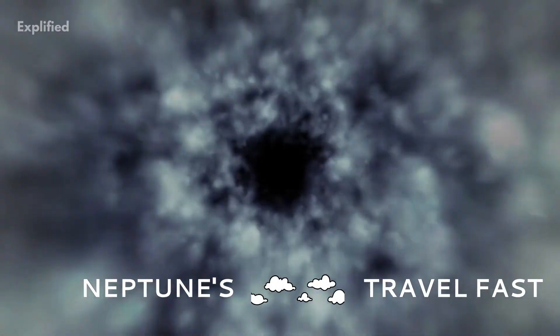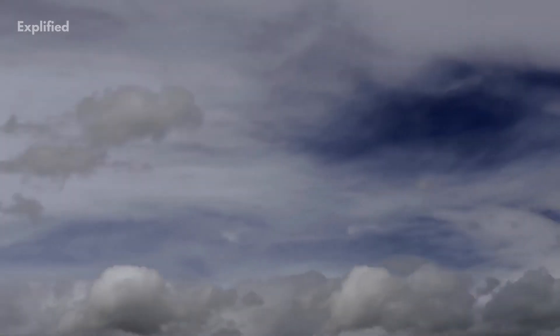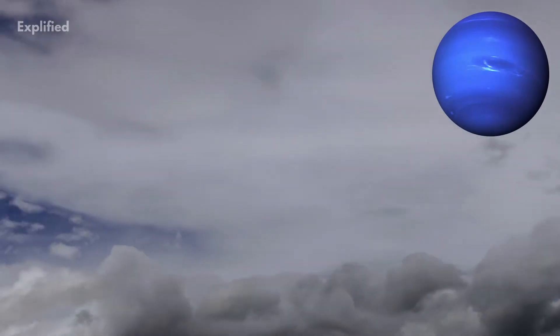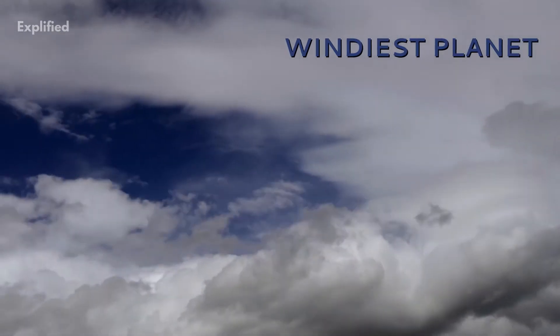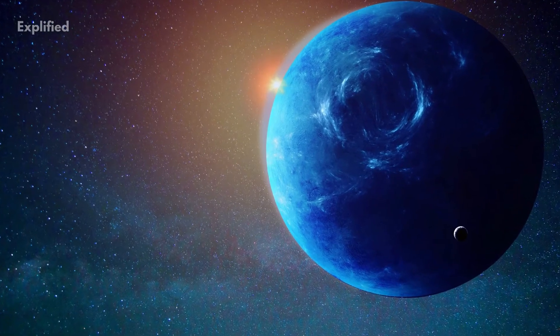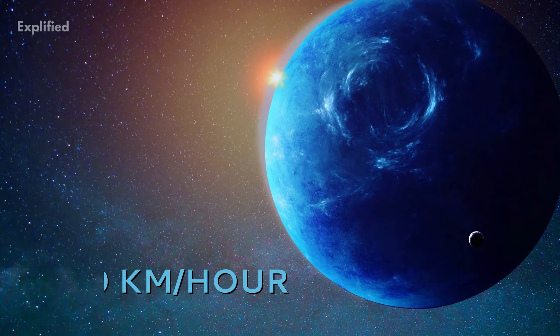Number 3. Neptune's clouds travel fast. It is quite incredible how an icy cold planet like Neptune can have its cloud tops travel so fast, making it the windiest planet of the solar system. The winds on Neptune move at a speed of around 2,100 km per hour.